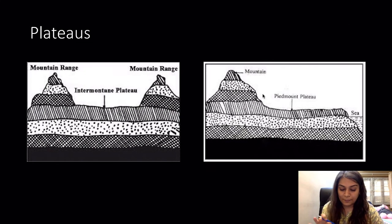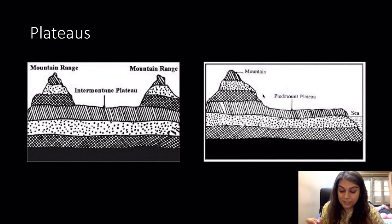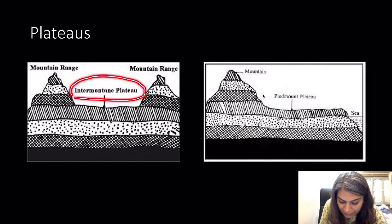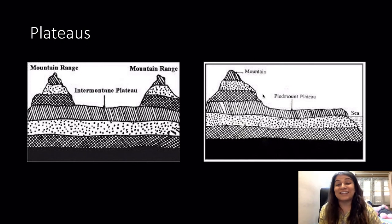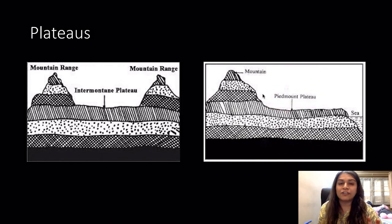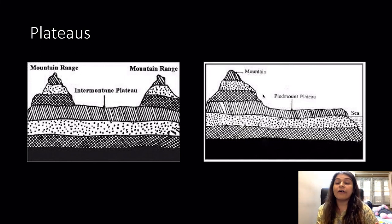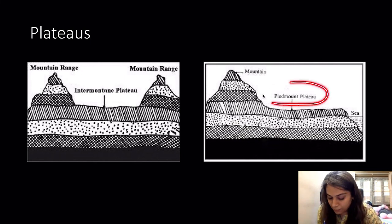There are two types of plateau. An intermountain plateau is surrounded by mountain ranges on all sides — the Tibetan Plateau is an example and also the largest plateau in the world. A piedmont plateau has a mountain on one side but on the other side it could have land or sea — it is not surrounded by mountains on all sides.